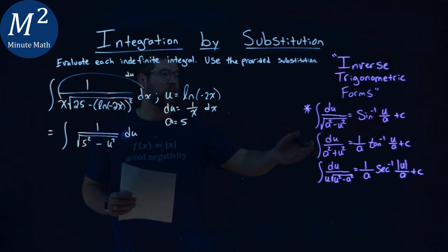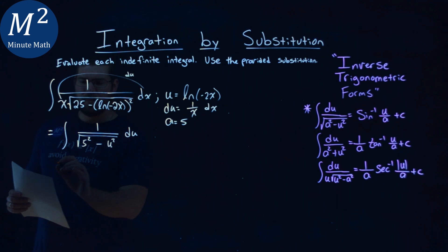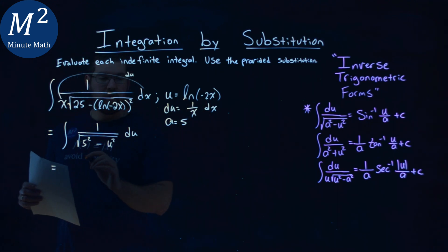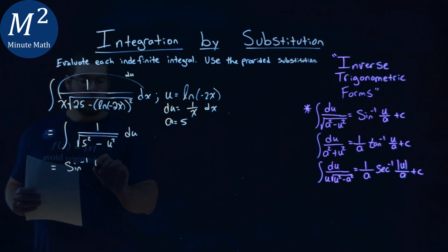We have it in the form that we need to convert with our inverse trigonometric form. So, using that definition here, we have the arc sine now of u over my a value, which is 5, plus c.